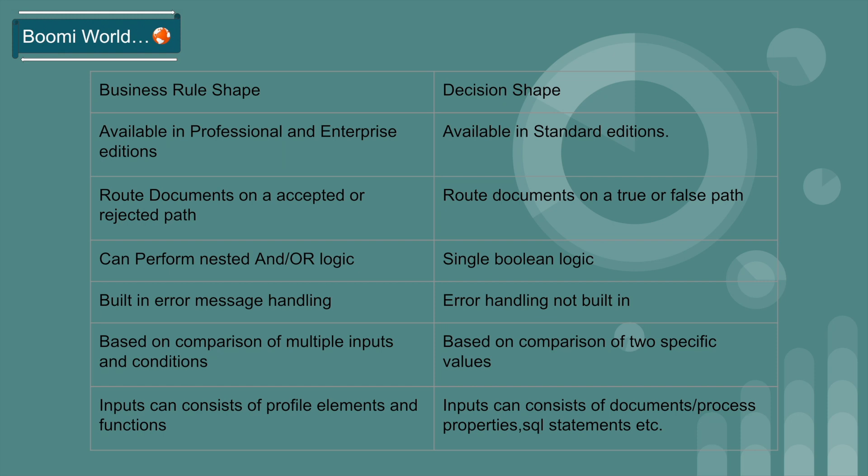In Business Rule Shape, built-in error message handling is available. In Decision Shape, built-in error handling is not available. Business Rule Shape will compare based on multiple inputs and conditions, while Decision Shape will compare two specific values.